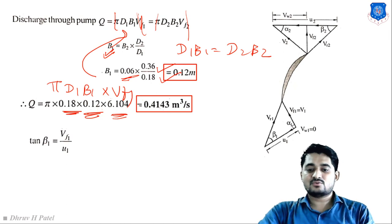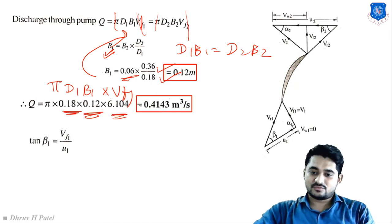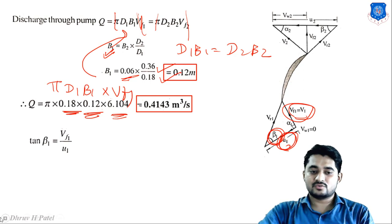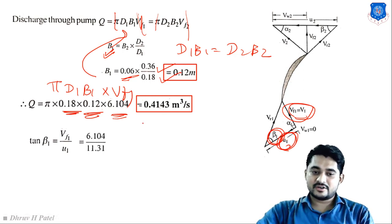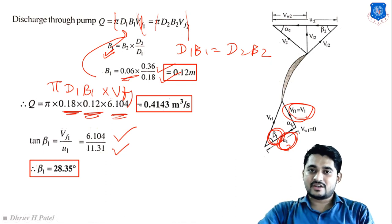Finally, we find blade angle β1 at inlet. From the inlet velocity triangle: tan β1 = V_f1 / u1 = 6.104 / 11.31. Therefore β1 = 28.35°.